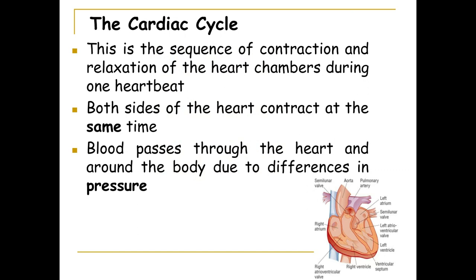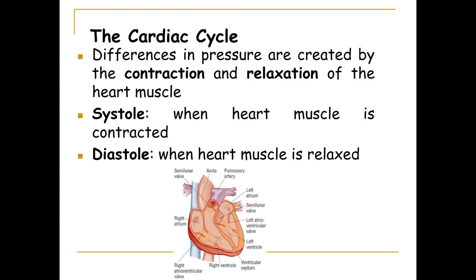In one heartbeat, both sides of the heart will contract at the same time. For example, both atria will contract at the same time, and then both ventricles will contract at the same time. This causes blood to pass through the heart due to the different pressure changes, which we are going to look at now.